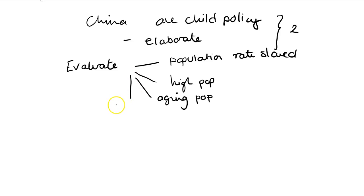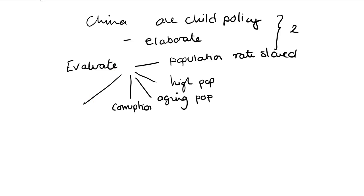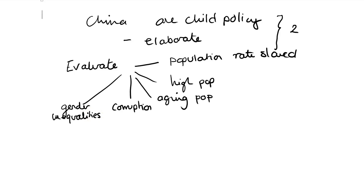You've got corruption, which some of you mentioned — an unfairness that some people who are wealthy might be able to afford to have two children. And gender inequality: the priority that parents might put onto having a boy means that you might have selective abortion. So any two of these evaluation points.